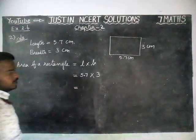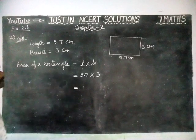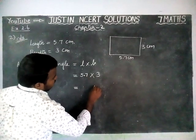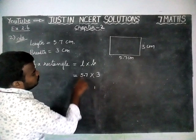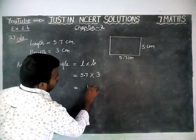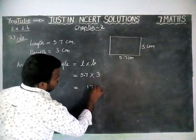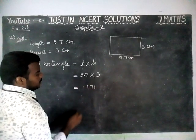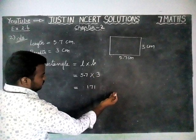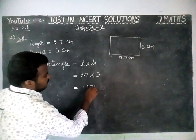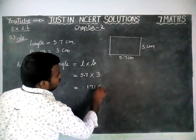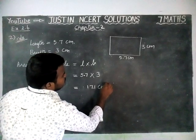First, we have to multiply the numbers. Then we can make the decimal part. 3 sevens are 21, remaining 2; 5 threes are 15. 15 plus 2 is equal to 17. So 171 is coming. Now, we have to make one decimal part, so from the right-hand side we are marking one decimal point. So the answer is 17.1 cm squared.